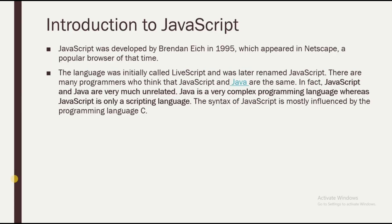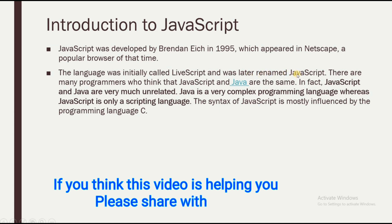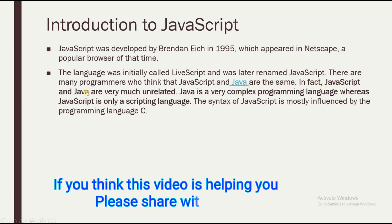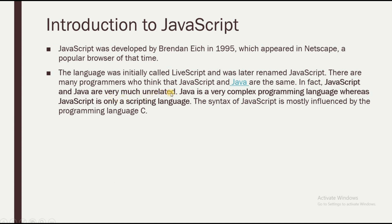First, let's understand what JavaScript is. JavaScript was developed in 1995 and appeared in Netscape, a popular browser of that time. The language was initially called LiveScript and was later renamed JavaScript. Many programmers think that JavaScript and Java are the same, but in fact they are very much unrelated — Java is a complex programming language whereas JavaScript is only a scripting language.